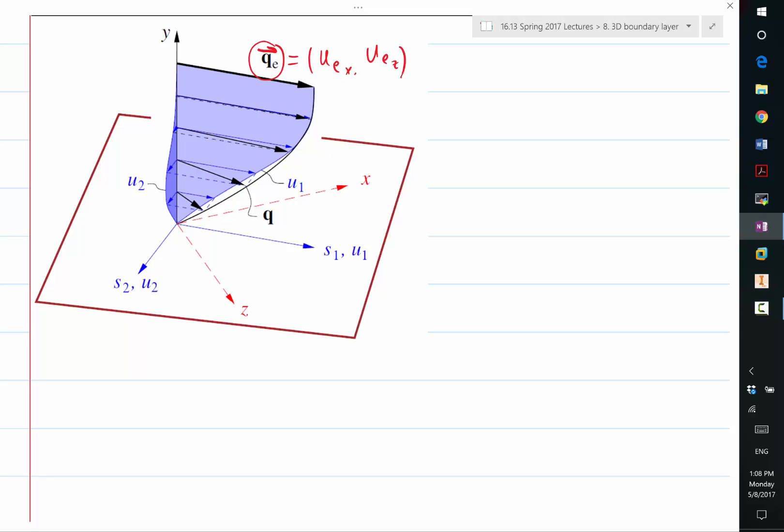Because when we talk about UE, we are only talking about the tangential velocity. We have thrown away the vertical velocity V. And all our normalization has been using UE.